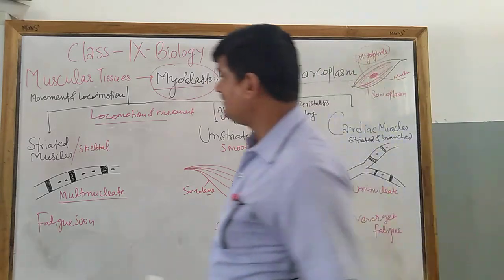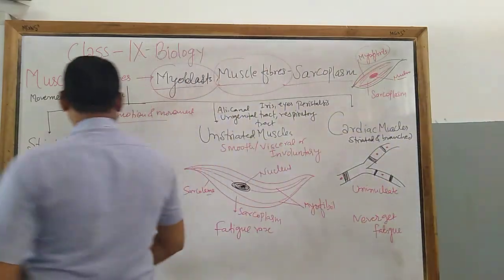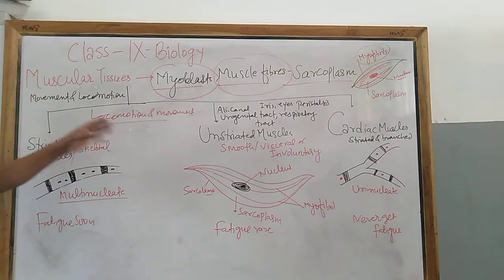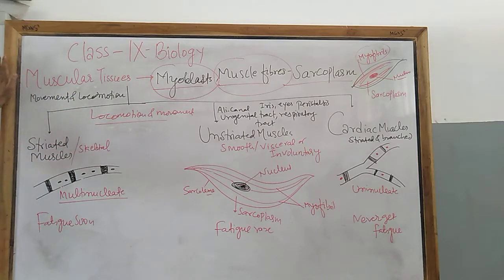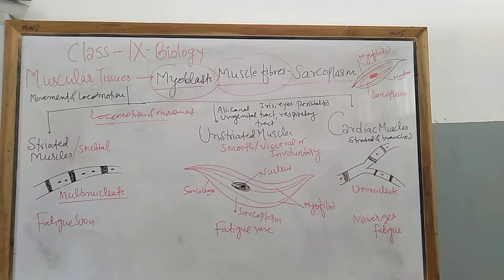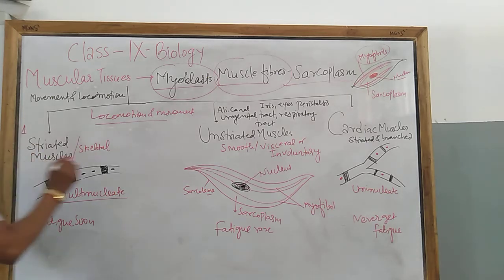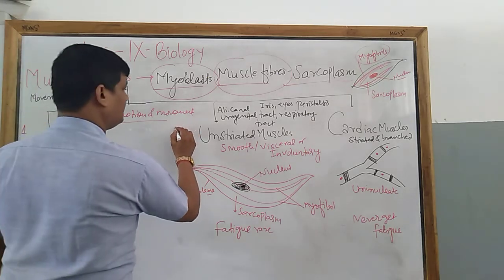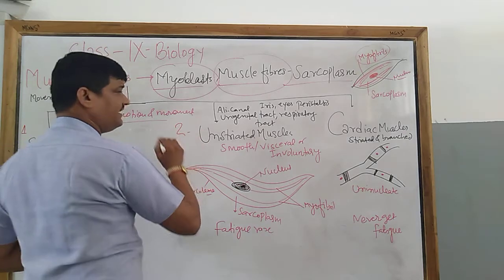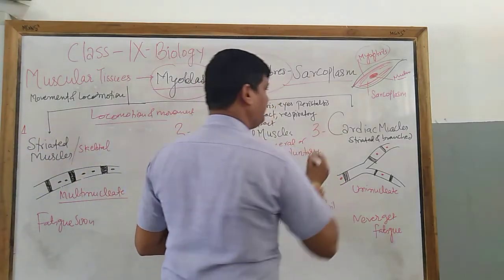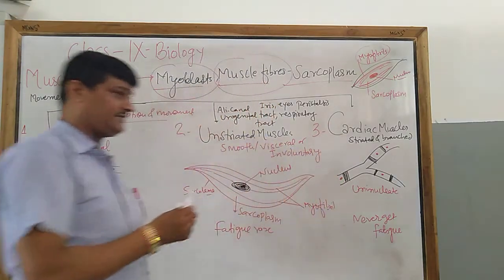On the basis of their structure and function, muscular tissues in animals are of three types: number one is striated muscle, number two is unstriated muscle, and number three is cardiac muscle.